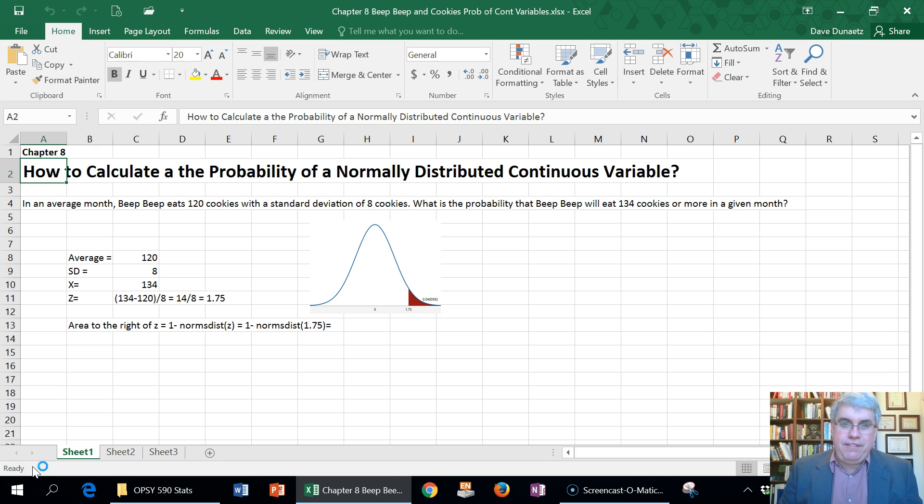In fact, there's a standard deviation of eight cookies per month. So that means that most months, he eats between 112 to 128. So that's 120 plus or minus eight. That's a standard deviation of eight. Now, we want to know, given this information, what's the probability that Beep Beep will eat 134 cookies or more in a given month?